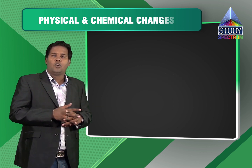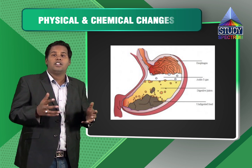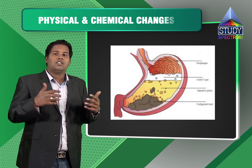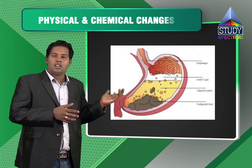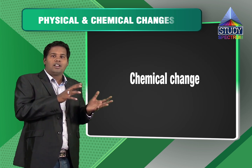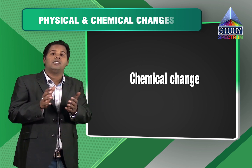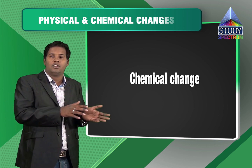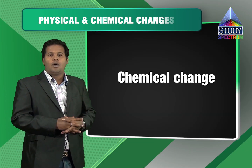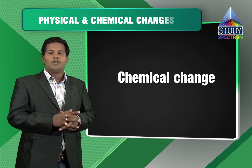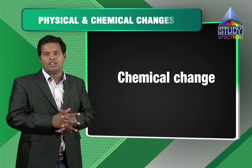Moving further, the last part of this question is digestion of food. Digestion of food is breaking of larger food particles into water-soluble particles — this is catabolism. Breaking of larger food particles into water-soluble smaller particles is actually a chemical change. You cannot reverse the process. Once the digestion of food has been done, it is irreversible. So digestion of food, which is a form of catabolism, is a chemical change.